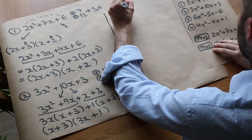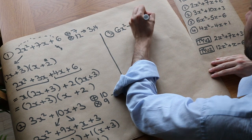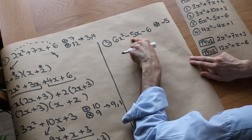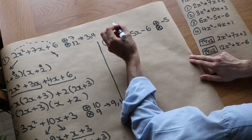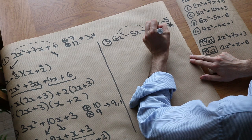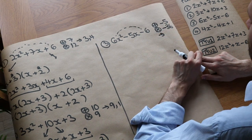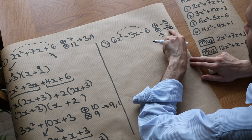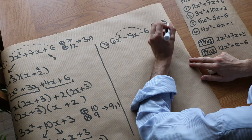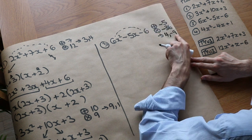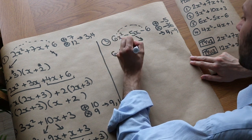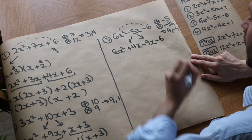We've got 6X squared minus 5X minus 6. We need two numbers which add to give the middle number minus 5 — never forget the sign. And multiply to give the first times the last number: 6 times minus 6 is minus 36. One number must be positive and one negative. Well 9 times 4 is 36, and 4 plus minus 9 gives minus 5, and 4 times minus 9 gives minus 36 — that works. So we split the middle term: 6X squared plus 4X minus 9X minus 6.